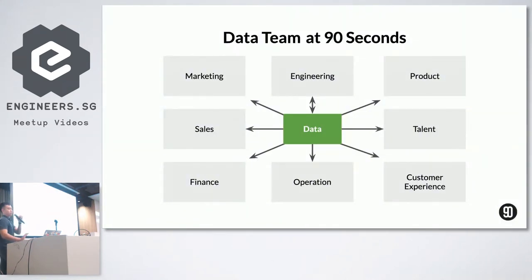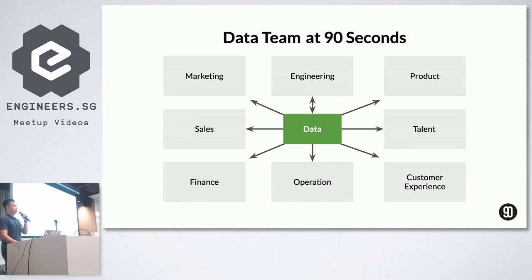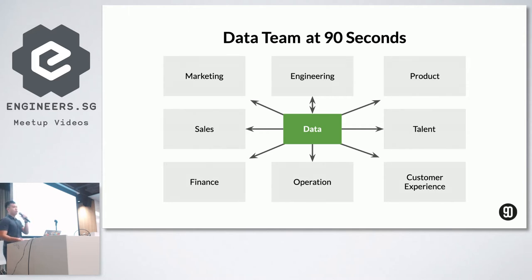I want to start off with how the data team works at Nine Seconds. The data team works with various stakeholders across the organization — that might include marketing, engineering, product, etc. But mainly, as you can see from the arrow, we primarily work with the engineering team, especially when we release data products.